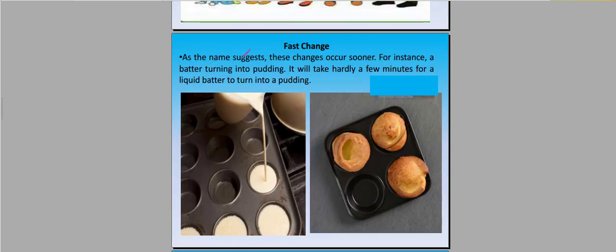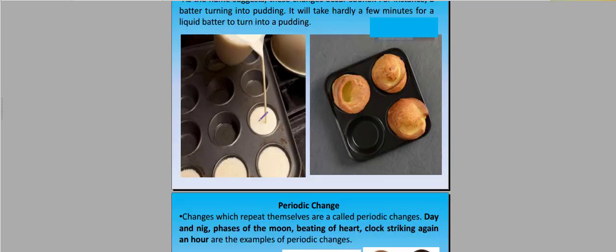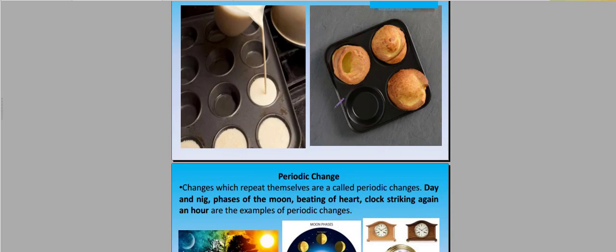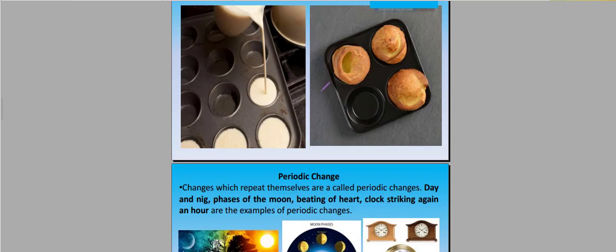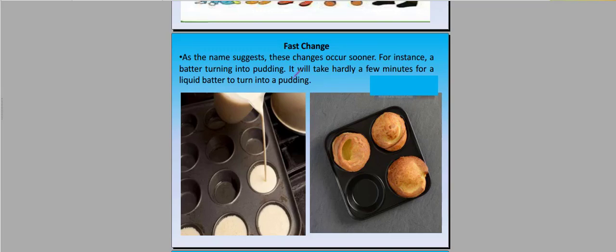Fast changes - as the name suggests, these changes occur more quickly. For instance, a butter turning into pudding. It will take hardly a few minutes for a liquid batter into pudding. When we make pudding or donuts or products like this, it will be made from a liquid. After some time, the form is solidified. So you have seen the liquid form has changed. These are fast changes.